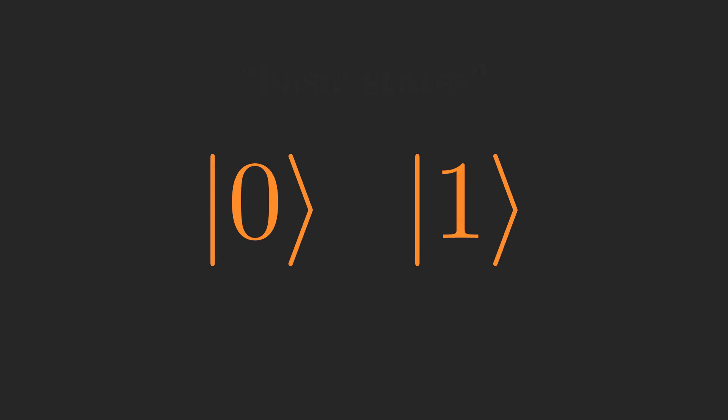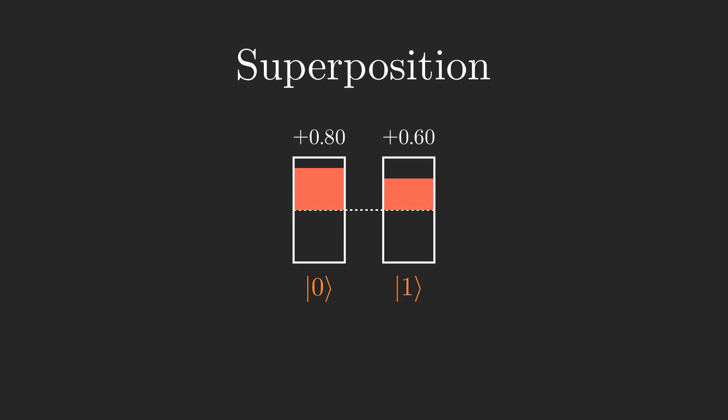What makes a qubit special is that it can exist in what is called a superposition of its basic states, which is a sort of in-between state. Specifically, each of the basic states has some number called an amplitude associated with it. Here, the amplitude on 0 is 0.8, and the amplitude on 1 is 0.6.